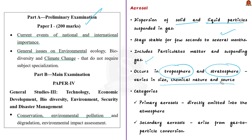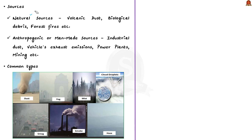Aerosols can be divided into two broad categories: primary aerosols — particles directly emitted into the atmosphere like dust and sea salt — and secondary aerosols, which arise from gas-to-particle conversion through condensation or direct nucleation. Natural sources of aerosols include volcanic dust, biological debris, and forest fires. Anthropogenic sources include industrial dust, vehicle exhaust emissions, power plants, and mining. Common types of aerosols include dust, fog, mist, cloud droplets, smog, smoke, and haze.